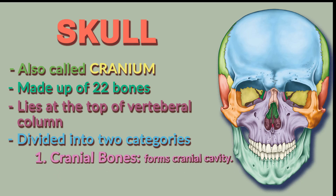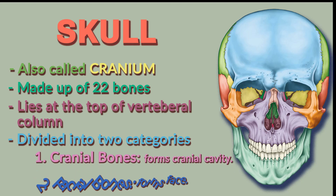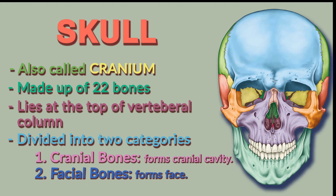The skull is divided into two categories: cranial bones, which form the cranial cavity and consist of 8 bones, and facial bones, which form the face and contain 14 bones. We will now first discuss cranial bones in detail.